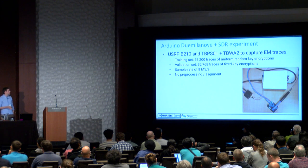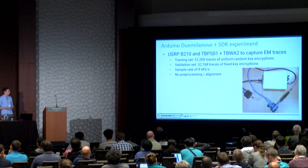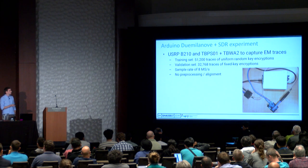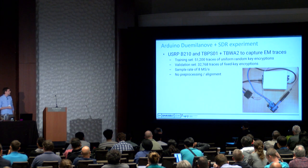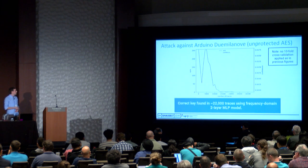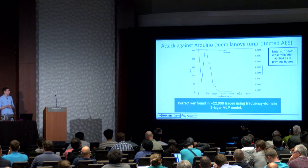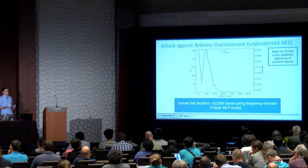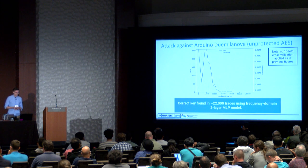For the second experiment, we wanted to see how well our model handles very noisy and unaligned signals. We made a training set of 51,000 random key encryptions, a validation set of 32,000 fixed key encryptions, captured at a relatively low sample rate of 8 million samples per second, without any pre-processing or alignment. We just fed the raw data to the neural network, and after 22,000 traces, we were able to find the correct key.